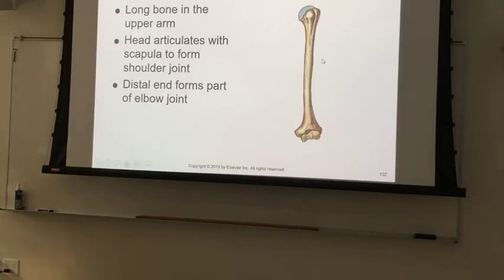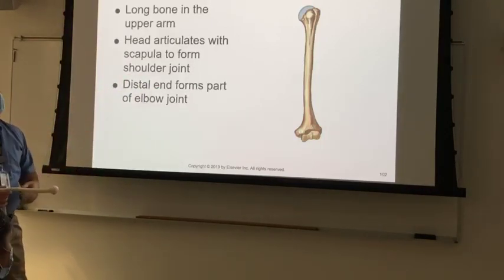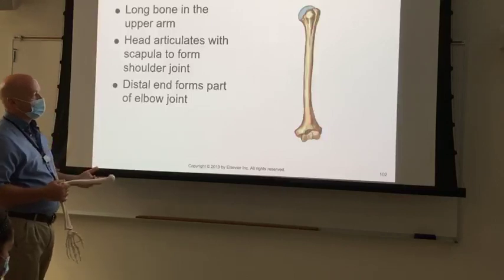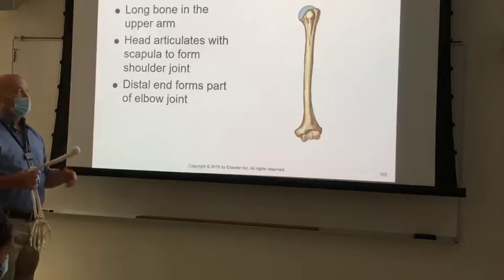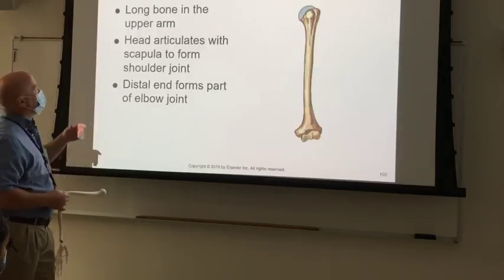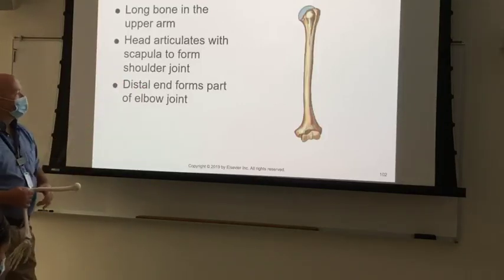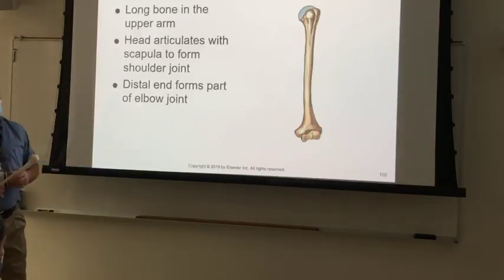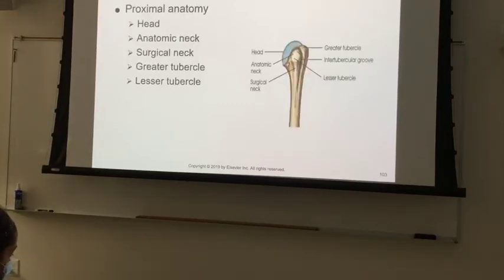The humerus is the big bone in the upper portion. A lot of people say they hit their funny bone and think that's the humerus — it's not. Your funny bone really isn't your bone; you just stimulated the nerve in a particular way against the bone. The head articulates with the scapula to form the shoulder joint; the distal end forms the elbow joint. The proximal end is the ball portion of the ball-and-socket joint — that's your shoulder.